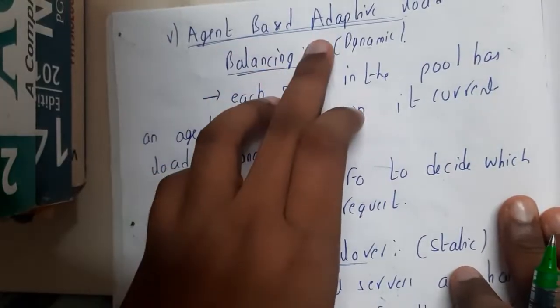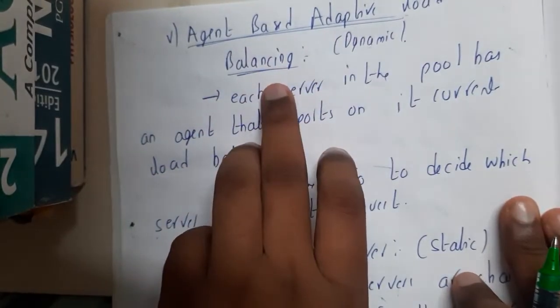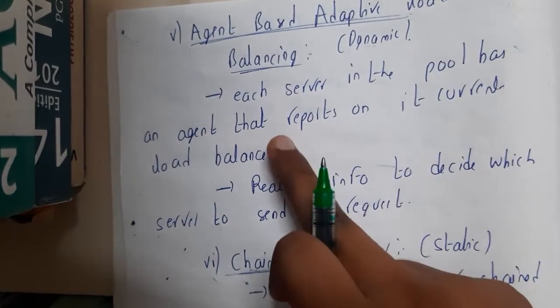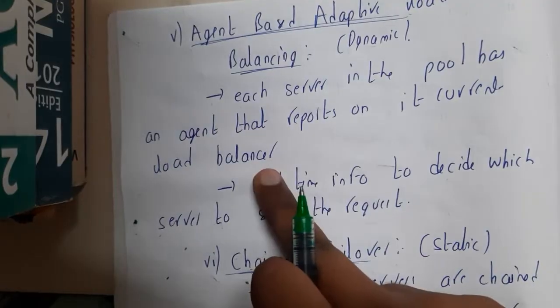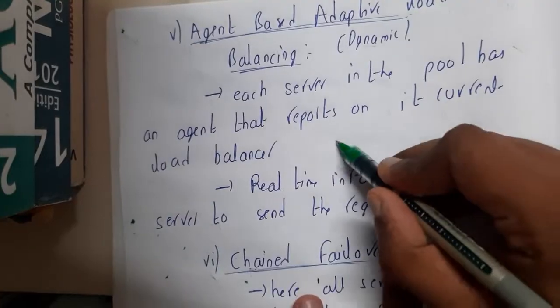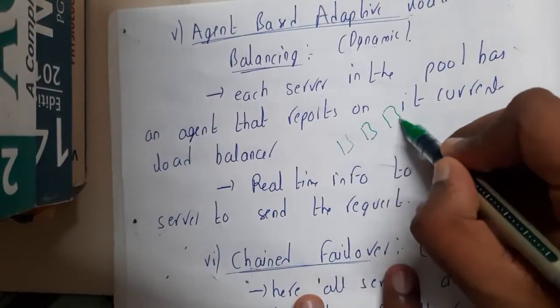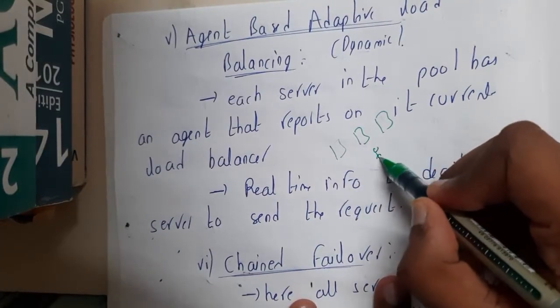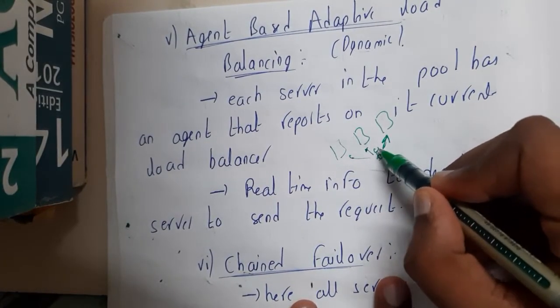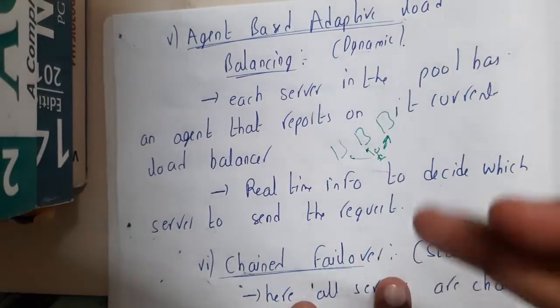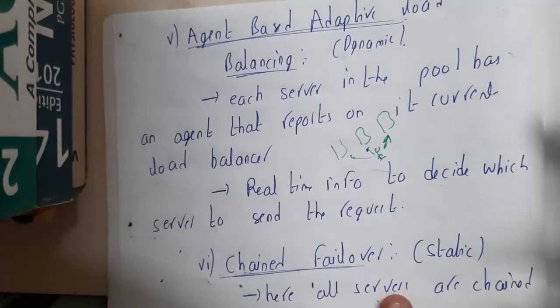The next algorithm is agent-based adaptive load balancing, which is also a dynamic method. Each server in the pool has an agent that reports real-time info to the load balancer to decide which server to send requests to. An agent checks each server and identifies which one has the minimum connections or minimum active links, then decides where to send the request.